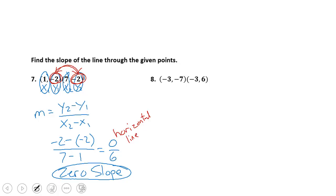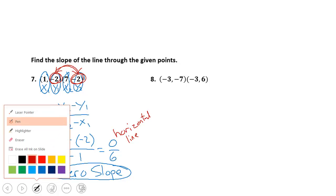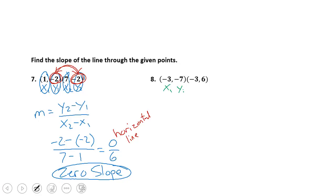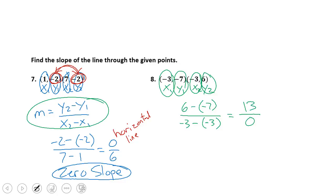Let's take a look at example number 8. In example number 8, I'm going to label again x1, y1, x2, y2. Using my slope formula, I'm not going to write it down again, but remember, it's over here. We're going to put in y2, which is 6, minus y1, which is negative 7, over x2, which is negative 3, minus x1, which is negative 3. When we do the math, 6 minus negative 7 is 13, and negative 3 minus negative 3 is 0.